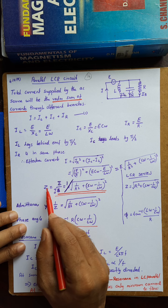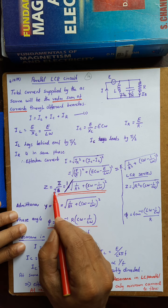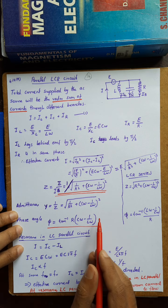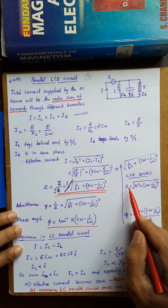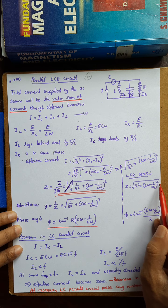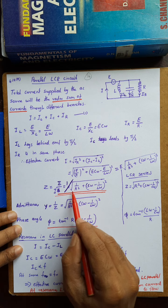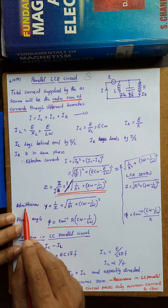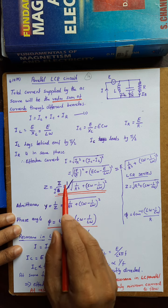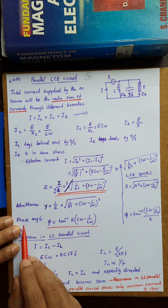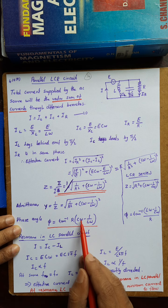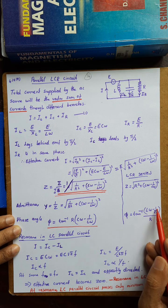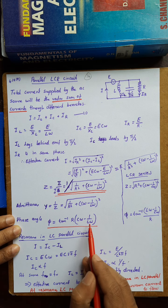Impedance Z is defined as EMF divided by current. So impedance equals 1 divided by the square root of (1/R)² plus (C·omega minus 1/(L·omega))². We also define admittance as the inverse of impedance. The phase angle phi is given by tan⁻¹ of R times (C·omega minus 1/(L·omega)). In a series LCR circuit it was tan⁻¹ of (L·omega minus 1/(C·omega)) divided by R.